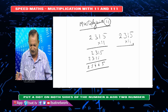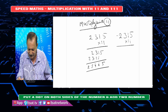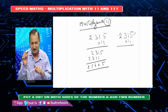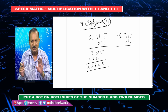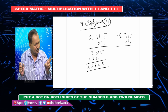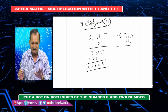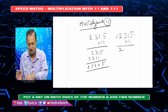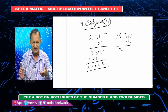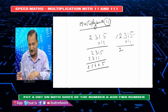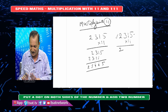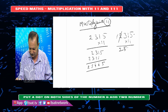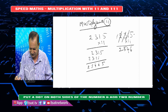Put a dot here, put a dot here, a dot here, a dot here — put a zero on either side of the number. Simply add 2 adjacent digits: 0 plus 2 is 2, 2 plus 1 is 3 — wait, let me redo. 0 plus 2 is 2, 2 plus 1 is 3, 1 plus 5 is 6, next 5 plus 0 is 5.